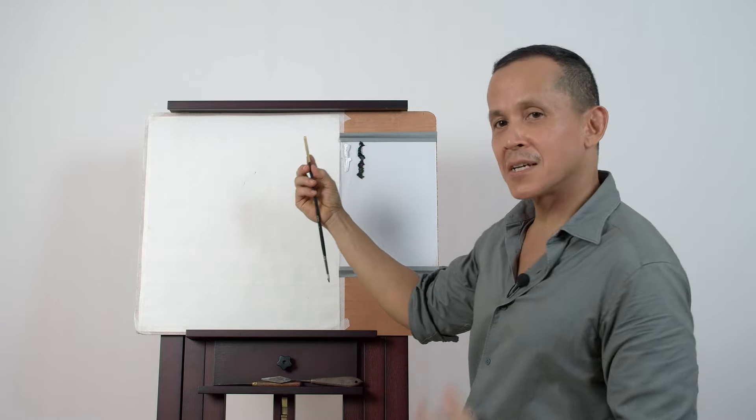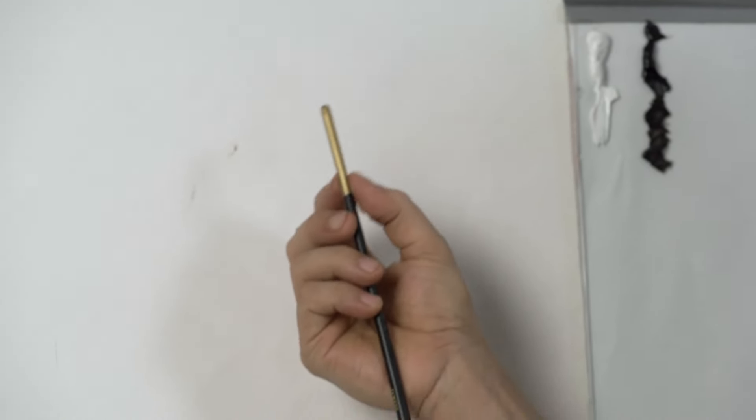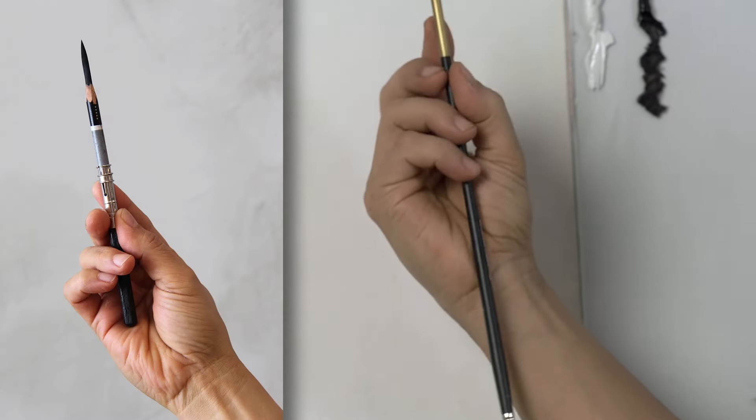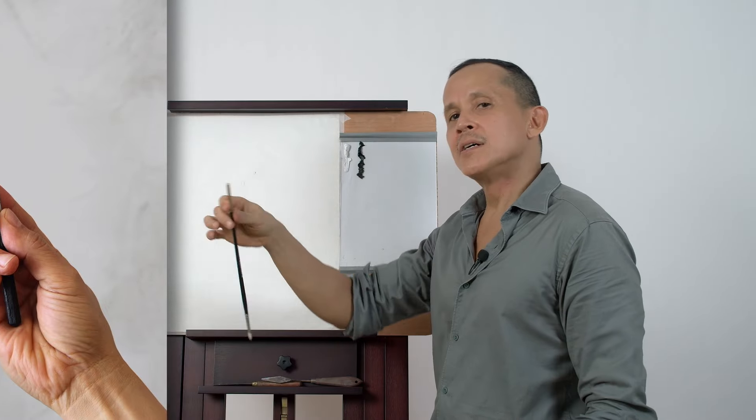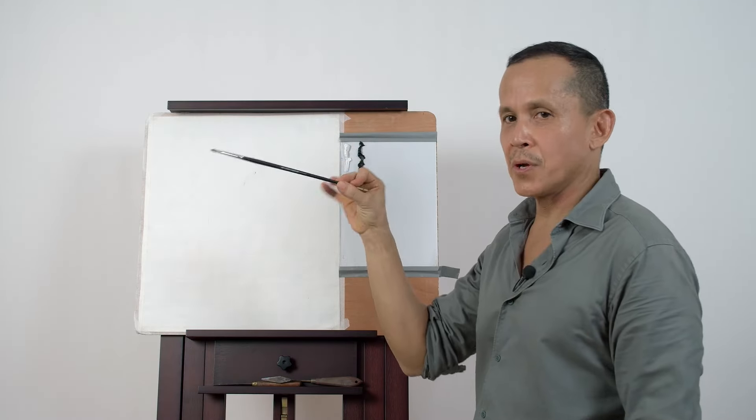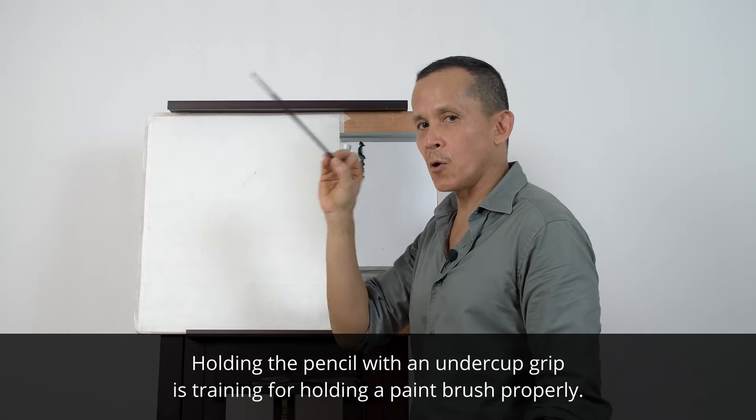And that's why we draw like this. Remember those of you who may be taking my drawing classes or other drawing classes? We always talk about this grip, the undercup grip, where you hold your pencil like this with the thumb on top. Why do we train this grip? So we can get ready for this bad boy. Undercup grip with a pencil prepares you to paint, to hold the brush properly.